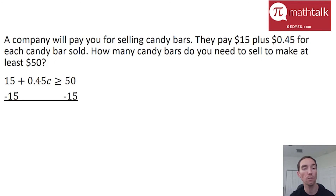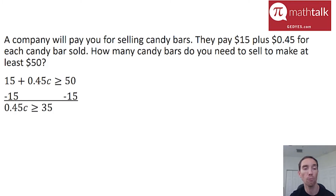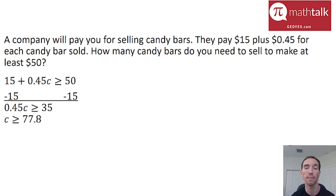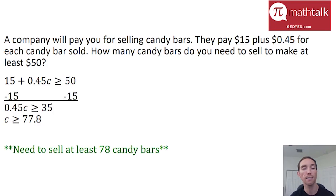The first step is to subtract 15 from both sides to get the variable by itself. That leaves 0.45C is greater than or equal to 35. Then I divide both sides by 0.45 — I recommend using a calculator. I get C is greater than or equal to 77.8. I can't sell 77.8 candy bars, and I can't sell just 77 because I need more than that. So I really need to sell at least 78 candy bars to make at least $50. If you sell 78, you'll actually make $50.10.